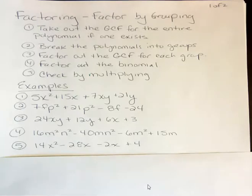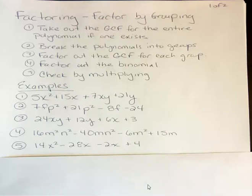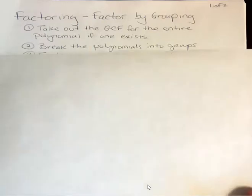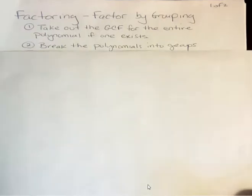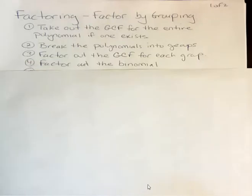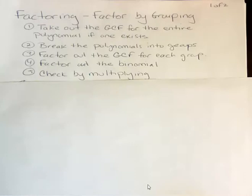First, we're going to go over the steps for factor by grouping. Step one: if you can take out a greatest common factor for the entire polynomial, do that first — if one exists, they don't always. Step two: break the polynomial up into groups. Step three: factor out the greatest common factor for each group. Step four: factor out the binomial that you get from step three. And then check by multiplying.